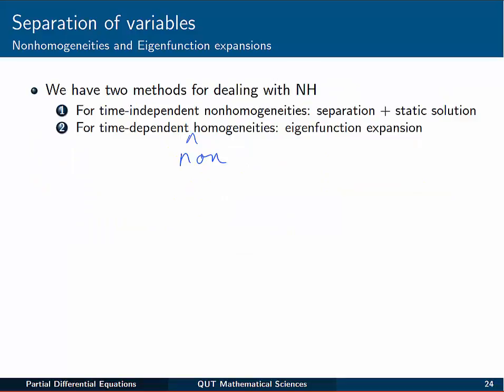So what do we do? There's a couple of methods we'll talk about here. The first one I'm going to talk about is where we have time-independent non-homogeneity, something like a plus g like we just saw. What we do there is use a static solution as well as separation of the PDE. In another video, I'll show you an example where we look at time-dependent non-homogeneity. When that's the case, we use eigenfunction expansion. But that's for another video.